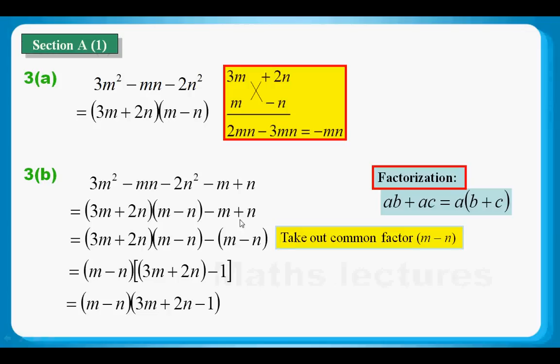If you are not confident with taking out the common factor (m - n), I have a simple factorization example here. They are just very similar, and I am confident that you can handle this easily and then go back to handle the more complicated one.